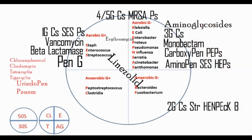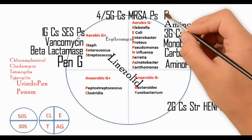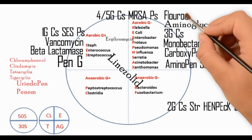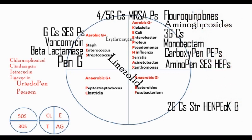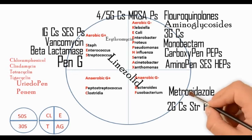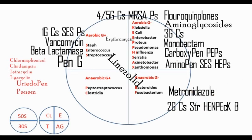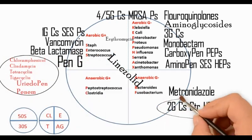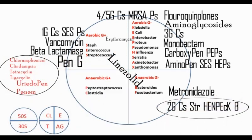Aminoglycosides, which can only be given by the intravenous route, and fluoroquinolones such as ciprofloxacin and norfloxacin, specifically cover only gram-negative organisms. Metronidazole covers anaerobes and protozoa. One should keep in mind that while using broad-spectrum antibiotics, one doesn't require to also use metronidazole.